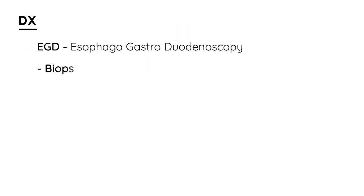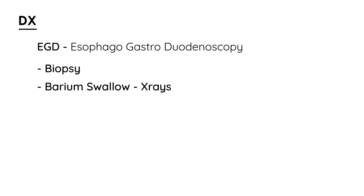Other tests that can be done include a biopsy and a barium swallow. A barium swallow followed by x-rays can detect anatomic abnormalities such as fistulas or something of that nature.